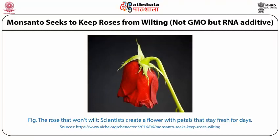Monsanto, a US-based biotech company, recently patented a new product that works its way into DNA and stops production of ethylene gas in plants. Ethylene promotes the ripening of fruits and shedding of petals of flowers. This could be a huge boost for florists and industry. So this flower has a long shelf-life, this rose won't wilt, and scientists have created flowers whose petals stay green for days.